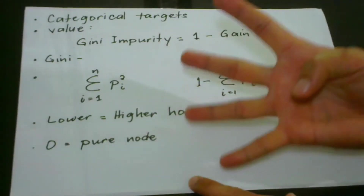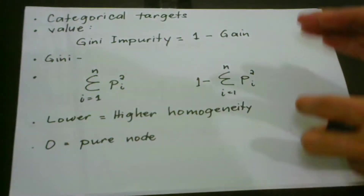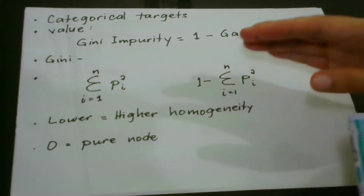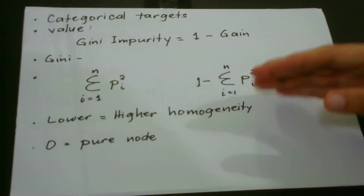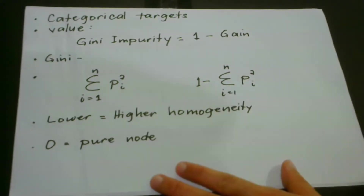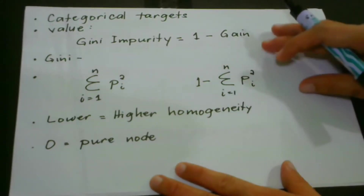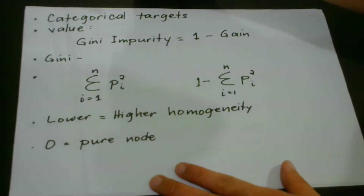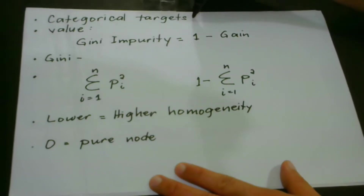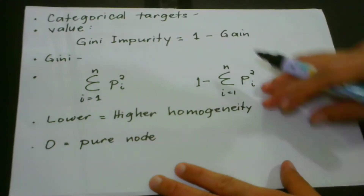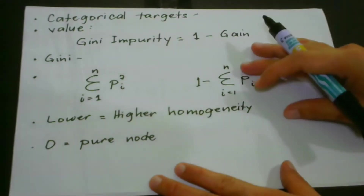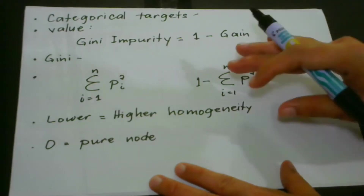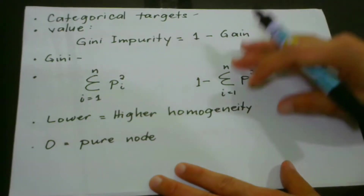We have four ways of splitting our nodes, and today we will cover the third way of splitting our nodes — what we call the Gini impurity. Just like the former two, Gini impurity performs a binary split and it only works with categorical targets. Gini impurity is actually the most popular because it is the easiest method of splitting a decision tree.